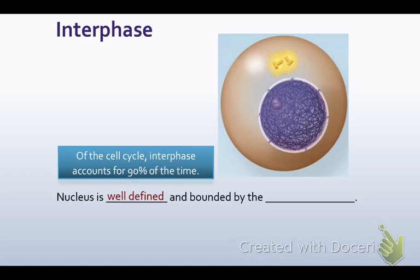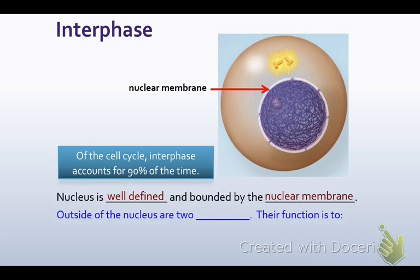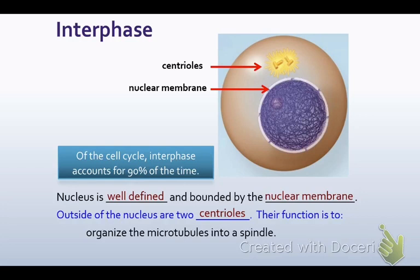The nucleus is well-defined and bound by the nuclear membrane, which we can see in this picture — that whole little light purple section. Outside of the nucleus are two centrioles, which you can see in the yellow right up here. Their function is to organize the microtubules into a spindle.